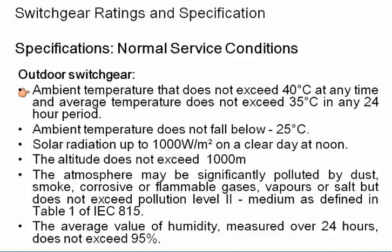Compared with indoors, outdoors you still have temperatures, but you also have solar radiation, UV content, ultraviolet radiation. Altitude is also considered. Do consider pollution classification. Typically you have four levels: low, medium, heavy, and very heavy — or level 1, 2, 3, and 4. You might specify level 2 usually. For polluted areas close to industry or close to the beach, you might specify level 3 or level 4. You also specify humidity because it's outdoors.